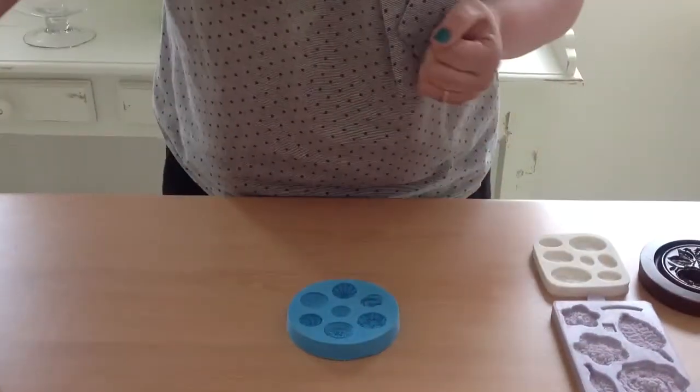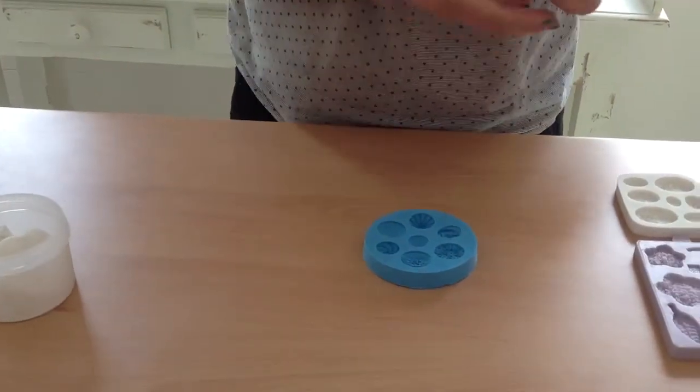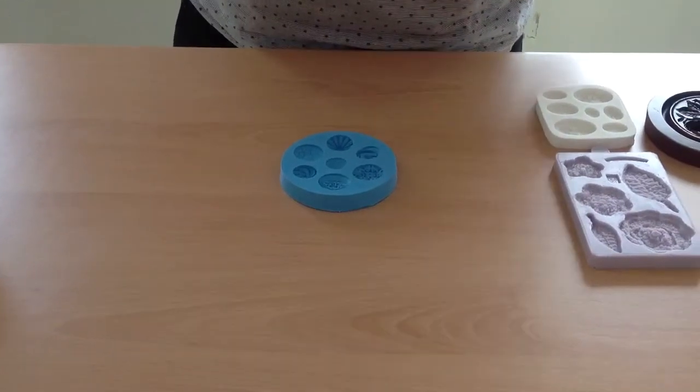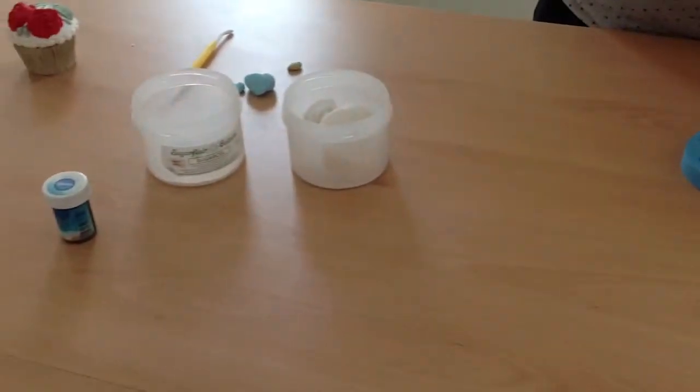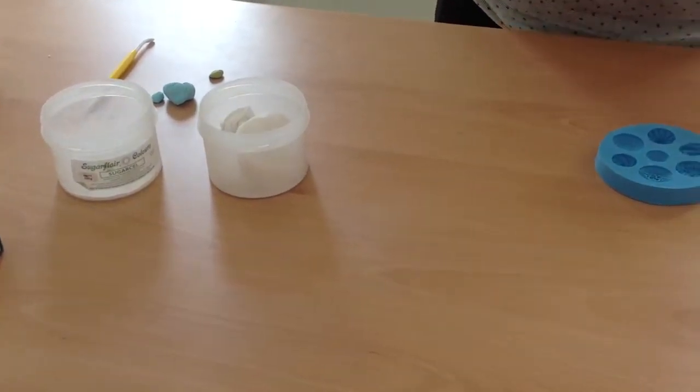So pre-treat your sugar paste with sugar cell, okay? One level teaspoon for every 250g block, roughly. I always use sugar cell. People do use Tylo or Guntrag, but I think this goes off a little bit quicker.